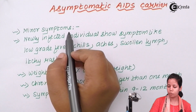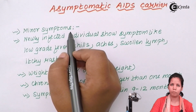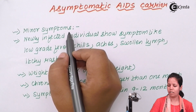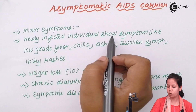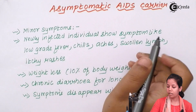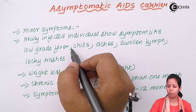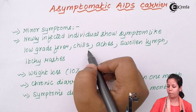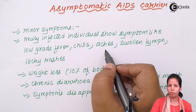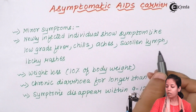Asymptomatic carriers are those who have just mild or very new symptoms. Newly infected individuals show symptoms like low-grade recurrent fevers — one day they may have a fever, the next day they could be completely normal — along with chills, continuous feeling of cold, and aches in the body, including muscular pain.